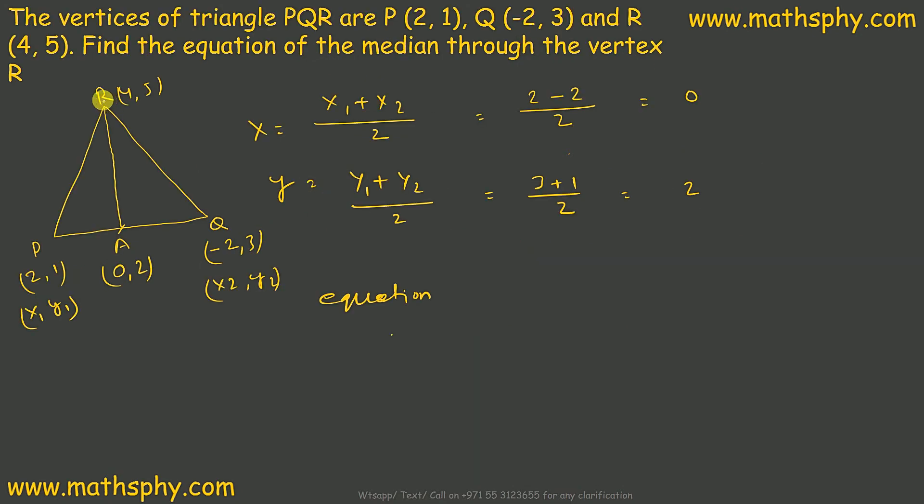Now we have to focus on RA. It says y minus y1 equals to y2 minus y1 over x2 minus x1 into x minus x1. Here, I can take x1, y1 and x2, y2 or x2, y2, x1, y1. I take this as x1, y1 and this as x2, y2.